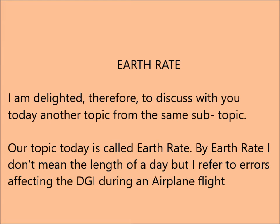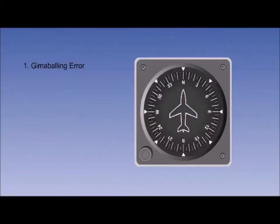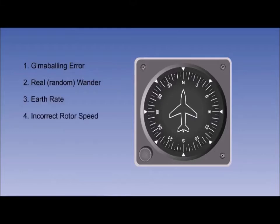By Earth Rate, I don't mean the length of a day, but I refer to errors affecting the DI (directional indicator) during an airplane flight. These errors include: gimbaling error, real wander — which is sometimes referred to as random wander — earth rate, errors caused by the effect of incorrect rotor speed on the latitude nut (which we shall explain shortly), and transport wander.